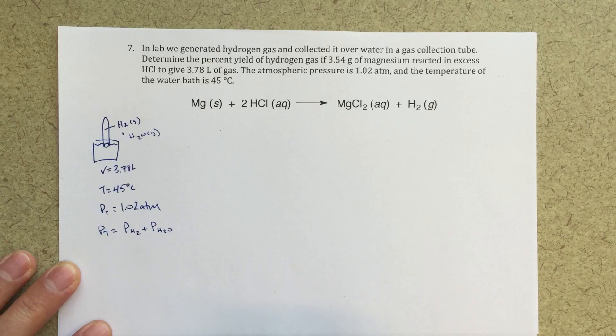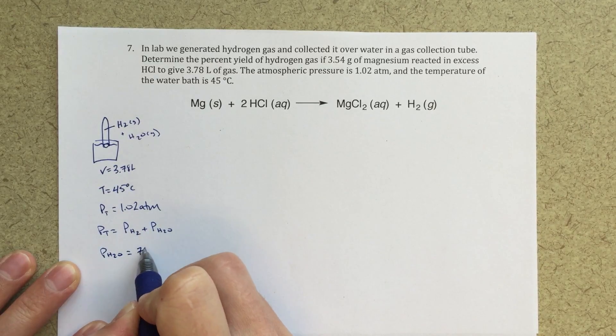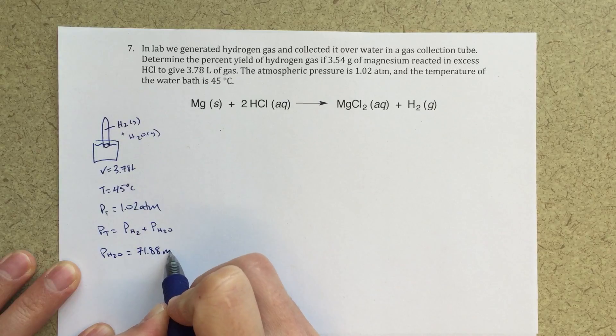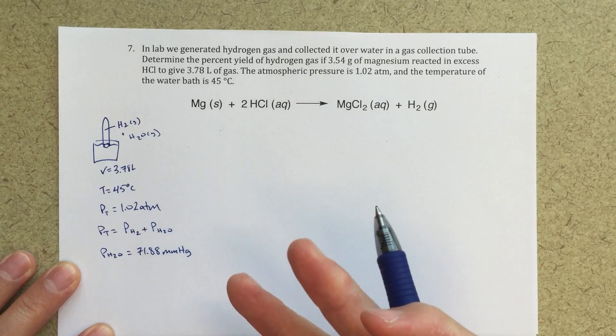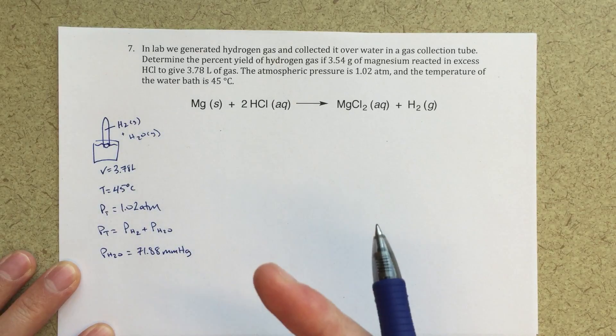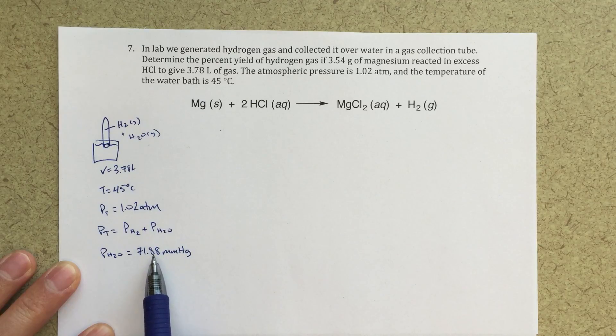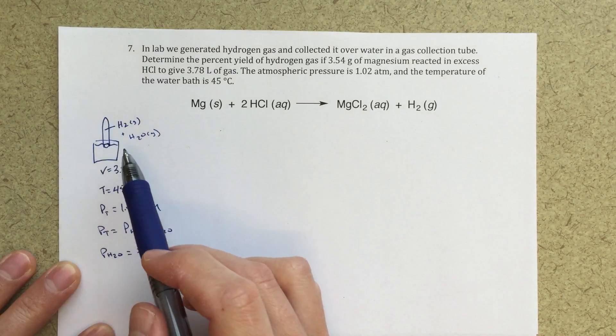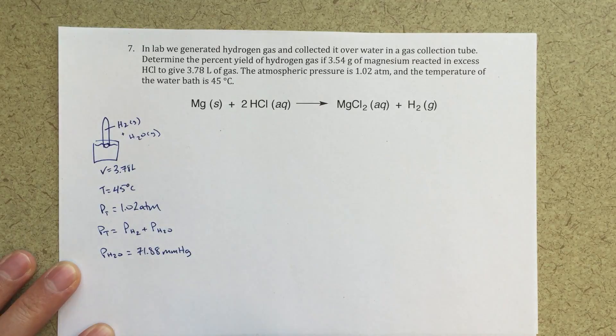And if we can look up what the pressure of water vapor is from our table, that's 71.88 millimeters of mercury when we're at 45 degrees. So as we heat up that water, the vapor pressure is going to increase. So if we're at 45 degrees Celsius, this is the vapor pressure due to water. So in this tube, there will not only be H2 gas, but there will be some amount of H2O gas as well.